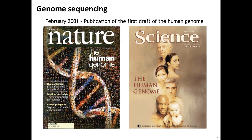Most of what we are discussing today was enabled by a key event in February 2001 — the first and only time, I think, that Nature and Science appeared on the same day. They both had the human genome on their cover. It was a big press conference at the White House. By now we know that whatever was published back then was only a rough draft, and the two drafts were also rather divergent — one produced by Craig Venter's team at Celera Genomics and the other by the Human Genome Project.